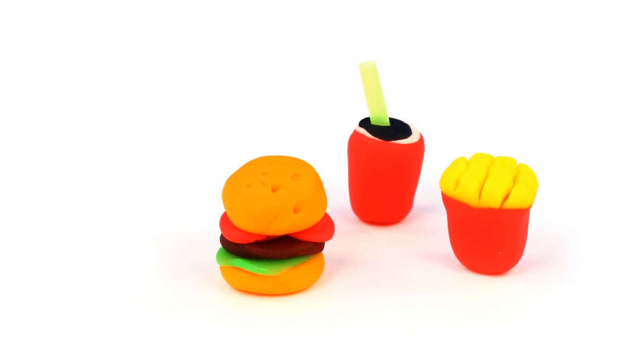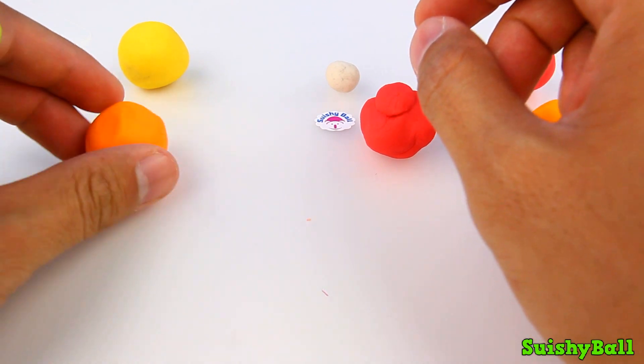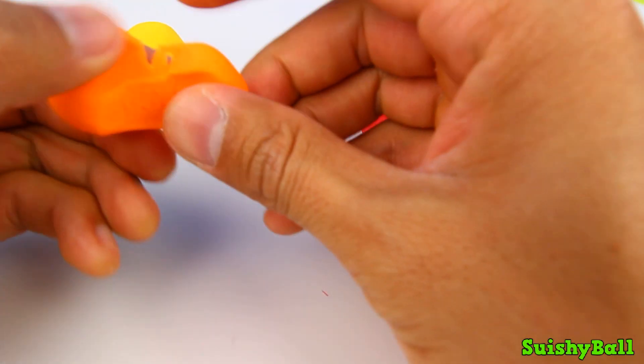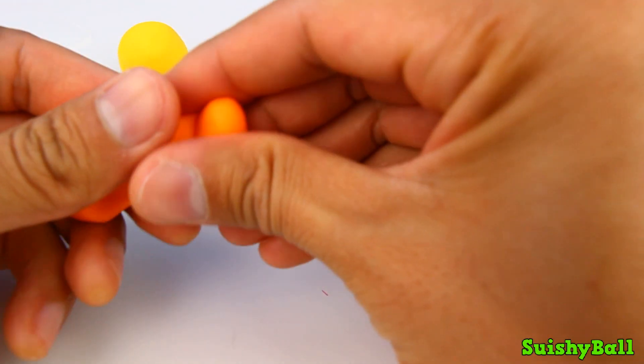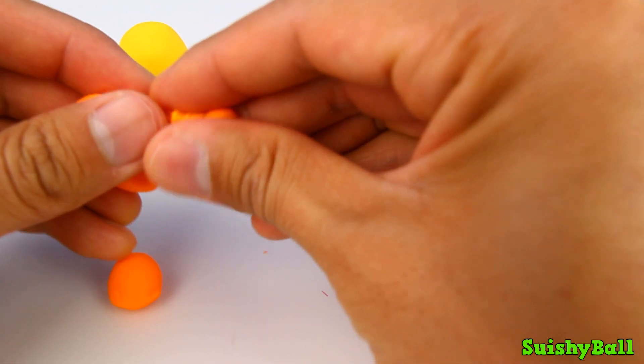Hey everyone, Swishy Ball here. Let's make a mini burger, fry, and drink set. Let's first start off with the burger. I'm going to use some of this orange play-doh to make the two ends of the bun.